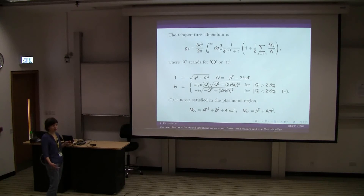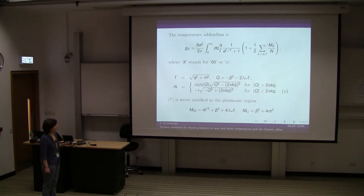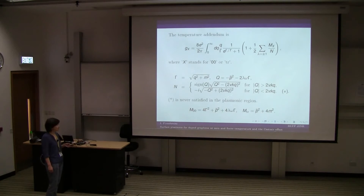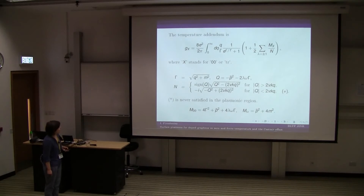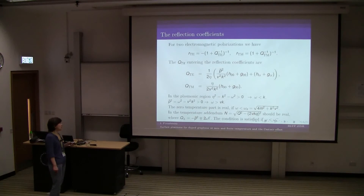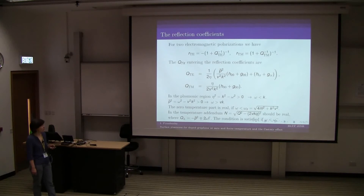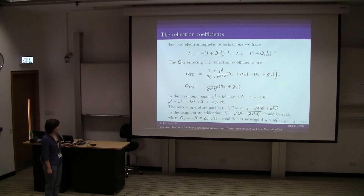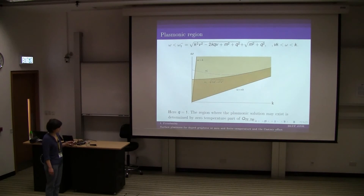Yesterday, Galina informed us that there was an error in this formula — in our paper. I corrected this in the transparency. This is the correct sign. Luckily, exactly this region doesn't play any role — this inequality is never satisfied in the plasmonic region — so what I calculated later is correct. We studied these functions Q which enter the reflection coefficients, and what we are interested in is finding the region where the surface plasmons exist at non-zero temperature. The plasmonic region is defined totally by the zero-temperature part.